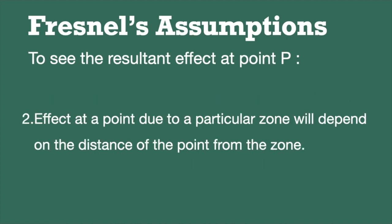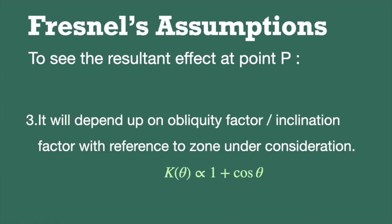Second, effect at a point due to a particular zone will depend on the distance of point from the zone. And third, it will depend on obliquity factor, which is also called as inclination factor with reference to zone under consideration, which is given by K(θ) proportional to 1 plus cos theta, where theta is the angle made with the horizontal axis.